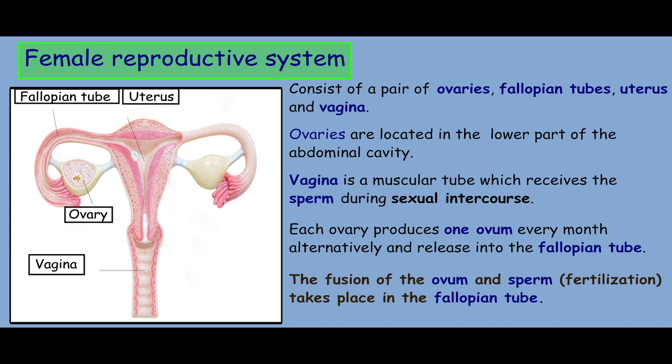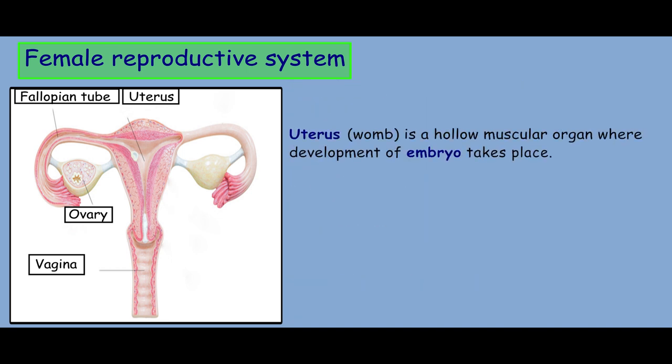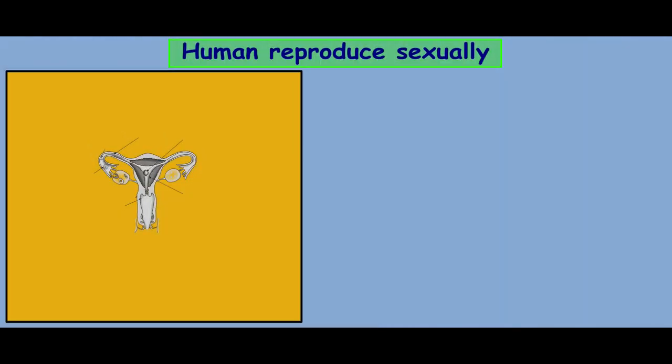The fusion of the ovum and sperm, which is known as fertilization, takes place in the fallopian tube. The uterus, which is known as the womb, is a hollow muscular organ where development of the embryo takes place. Now let us discuss how humans reproduce sexually.